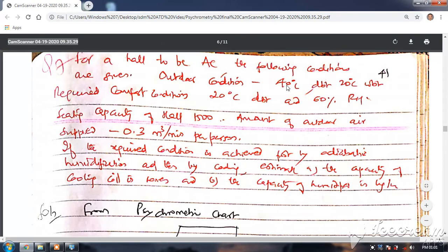We will plot this point A on the psychrometric chart. Then required comfort inside condition is 20 degrees centigrade and 60 percent relative humidity, then we will plot this indoor inside condition.